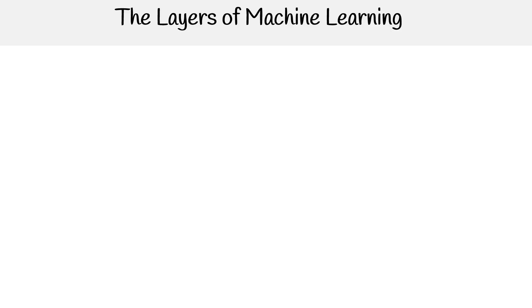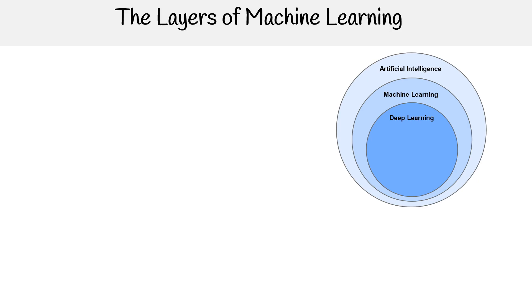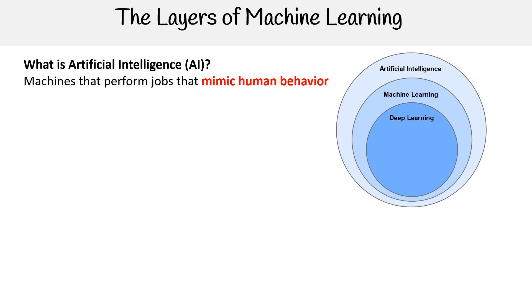Hey, this is Andrew Brown from Exam Pro and we're looking at the layers of machine learning. So here I have this thing that looks like kind of an onion. It's just describing the relationship between these ML terms related to AI, and we'll just work our way through here starting at the top.